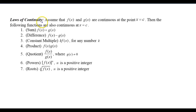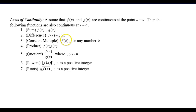Now let's look at the laws of continuity. Assume that f and g are continuous at the point x equals c. Then the sum and difference of those functions are also continuous at c. We can multiply the function by any constant k and it will still be continuous. We can multiply and divide the functions — the quotient still results in a continuous function as long as the denominator is not zero — and we can raise the function to a power or take the nth root and still get a continuous function.